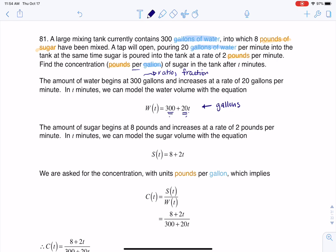Now sugar, we started with 8 pounds of sugar and then they're pouring more in. They're pouring more into the tank at 2 pounds per minute, so that's why I have that plus 2t. So the units on this are pounds.